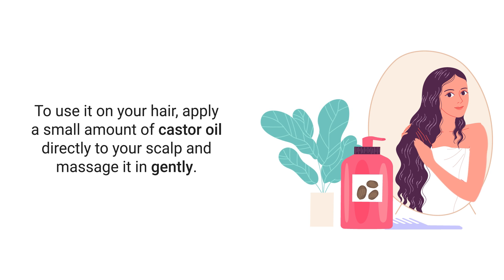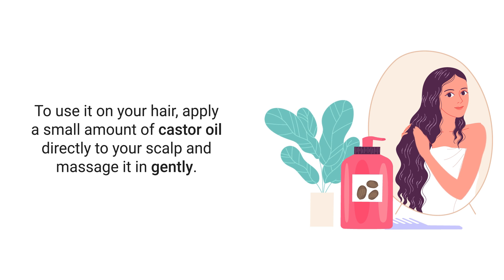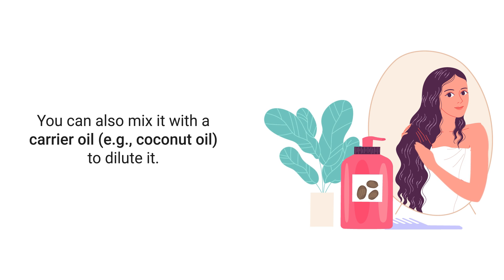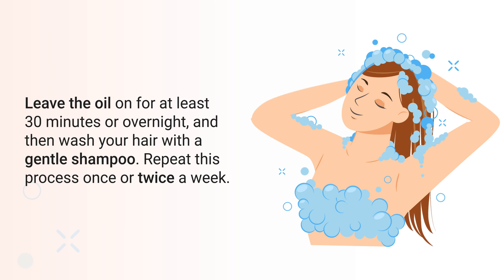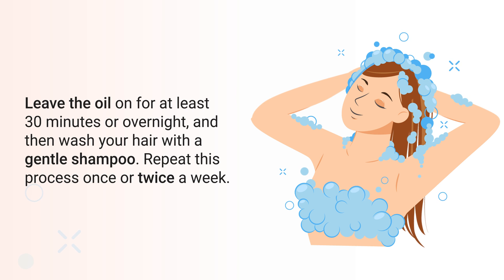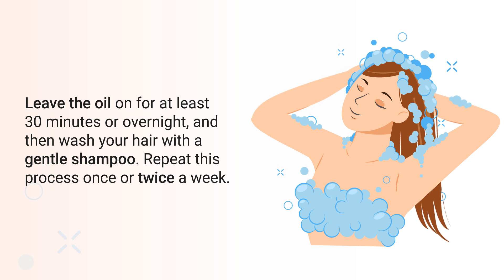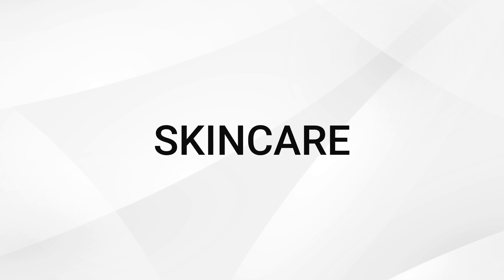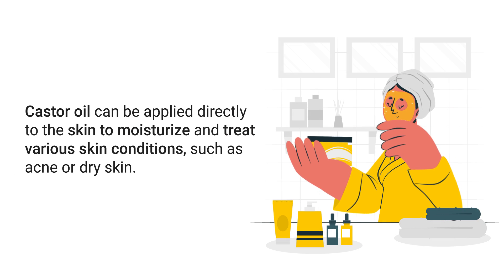To use it on your hair, apply a small amount of castor oil directly to your scalp and massage it in gently. You can also mix it with a carrier oil like coconut oil to dilute it. Leave the oil on for at least 30 minutes or overnight, then wash your hair with a gentle shampoo. Repeat this process once or twice a week.